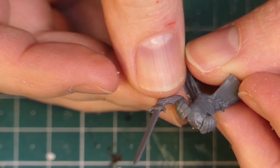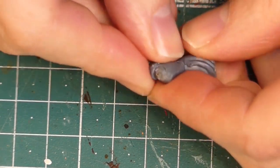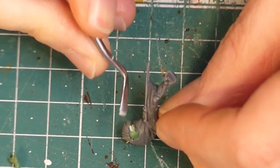Then it's time again for green stuff. To fill in the gap at the shoulder is much easier than remodeling the tabard. Just press the green stuff in the gap and shape it to the form of the body.